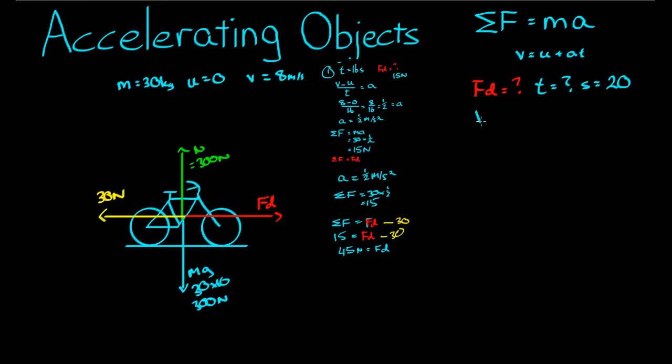Let's figure out the driving force required by the bike to achieve the acceleration from zero to 8 meters per second in 20 meters. So using the motion formula, V squared equals U squared plus 2AS. To find Fd, we need to know the sum of forces. To know the sum of forces, we need to know acceleration. To find acceleration, we need to have V, U, and S, which we do.